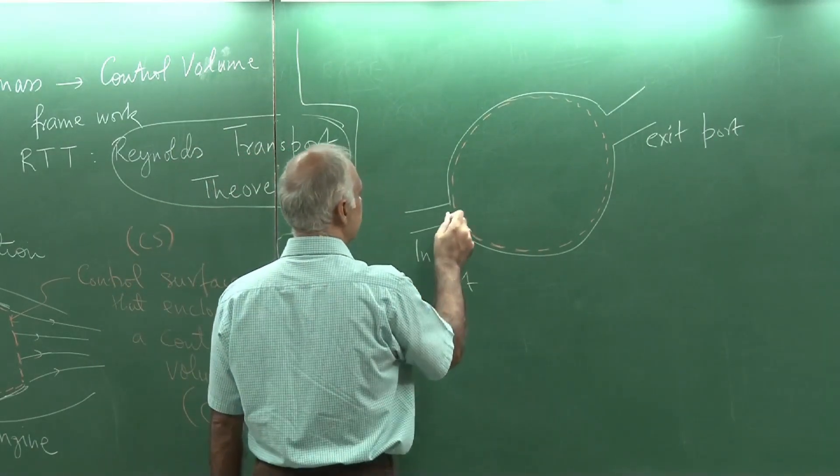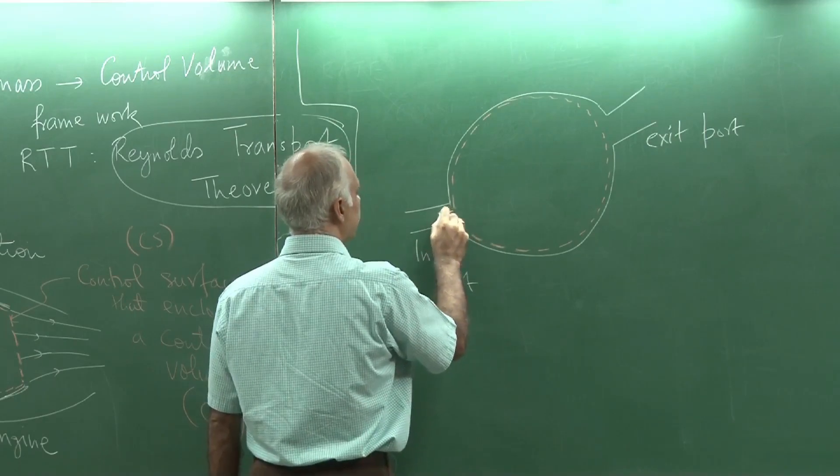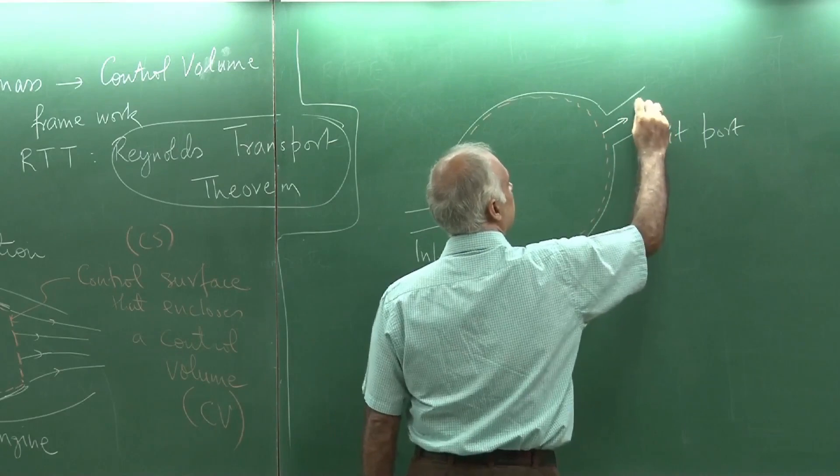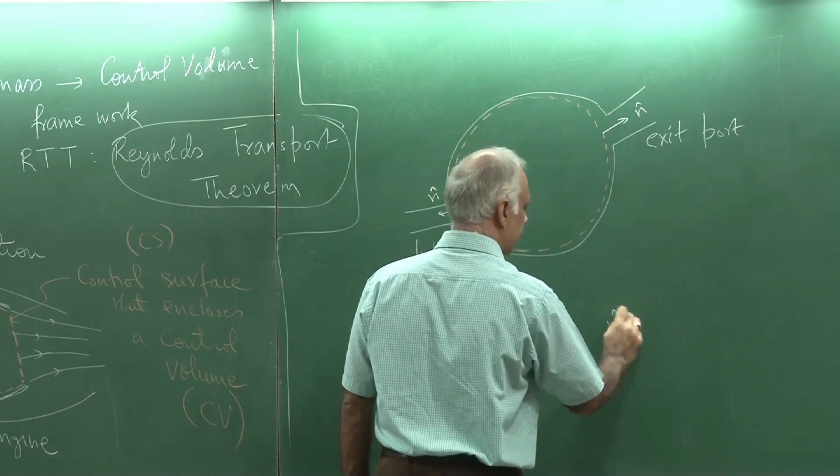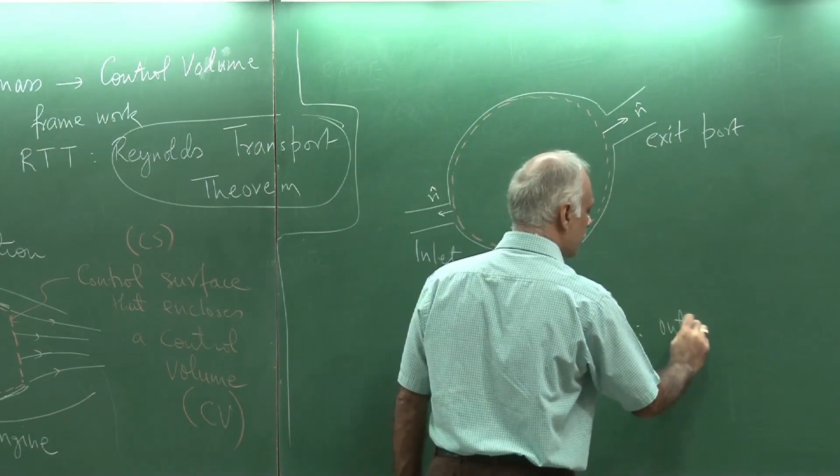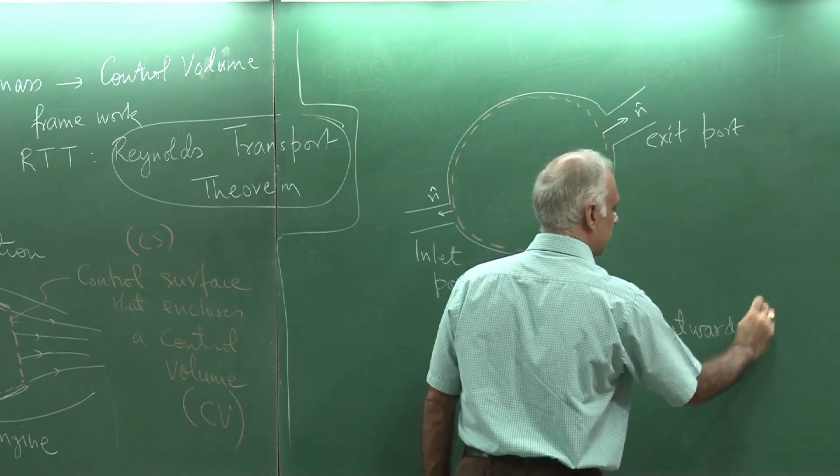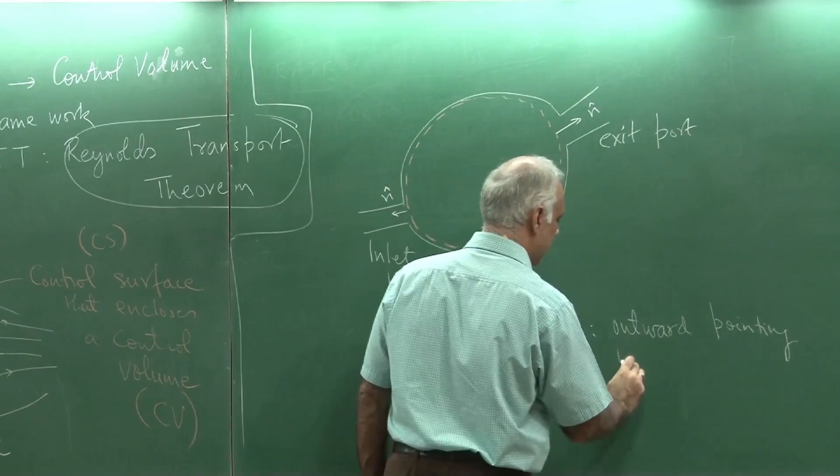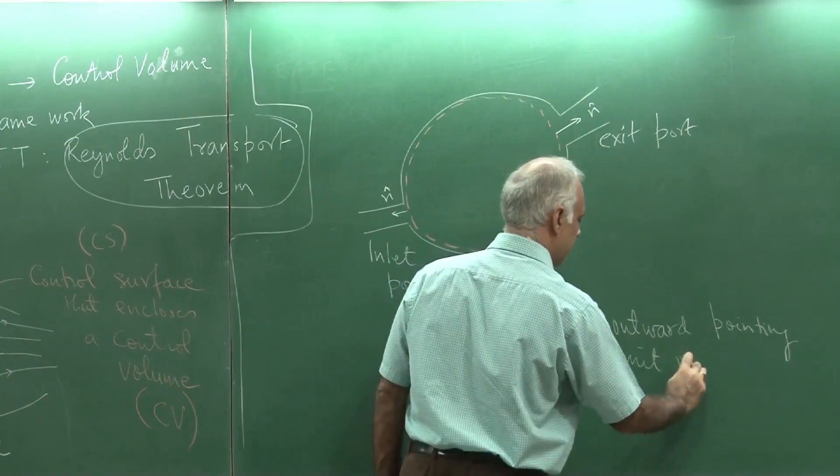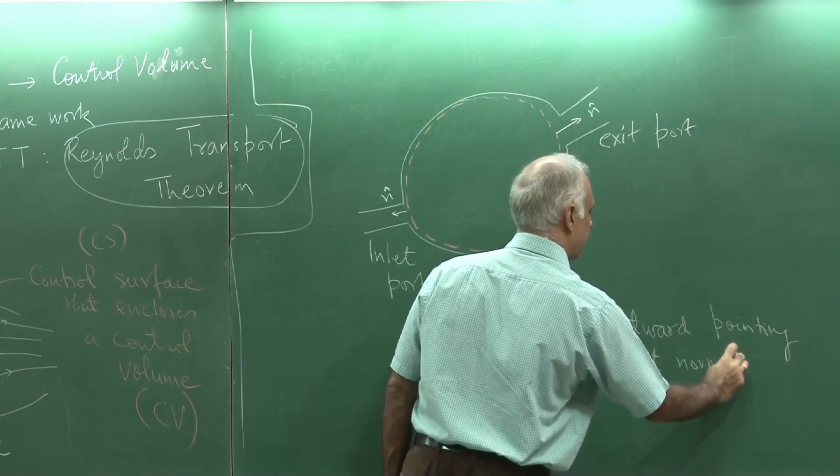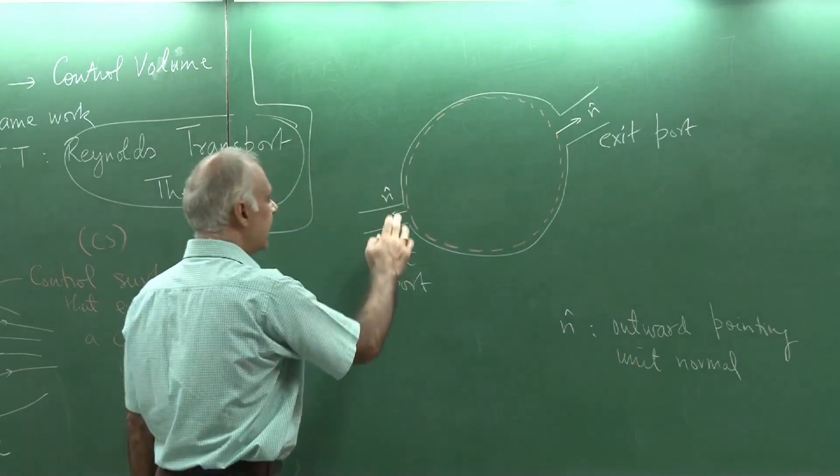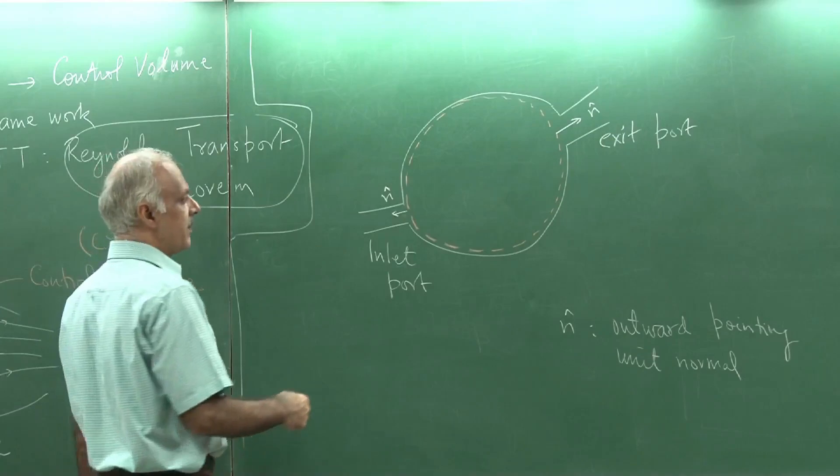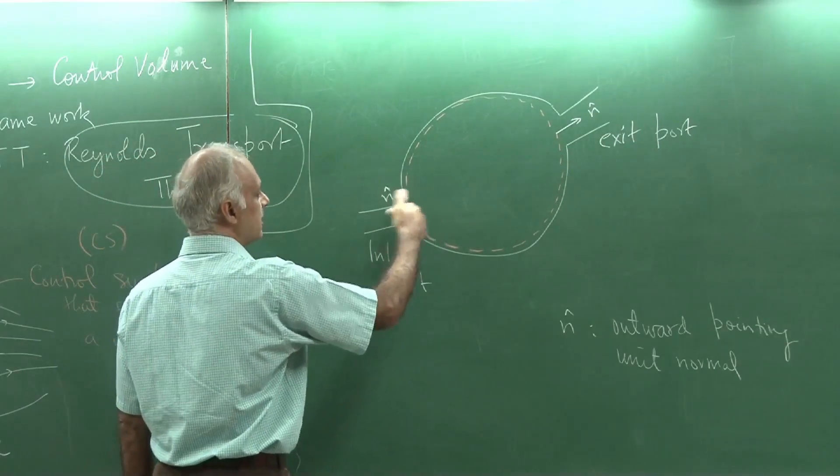I am further going to assume that let N be the unit normal. N is the outward pointing unit normal. Whenever there is an inlet port or an exit port, I first figure out a normal which is pointing outward.